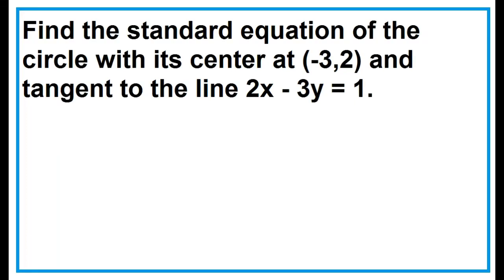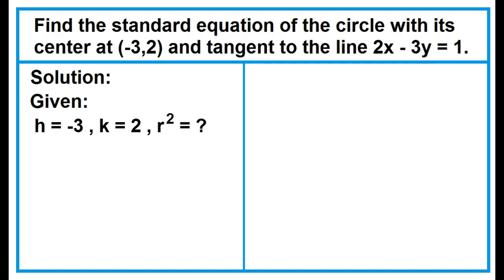Find the standard equation of the circle with its center at negative 3, 2, and tangent to the line 2x minus 3y equals 1. Given h equals negative 3, k equals 2, find r squared.